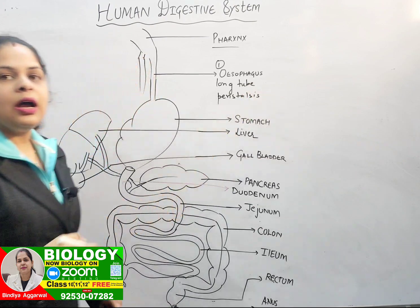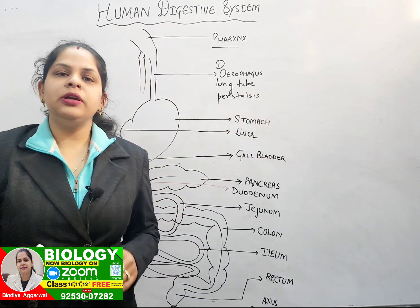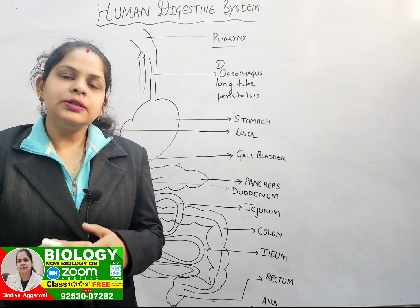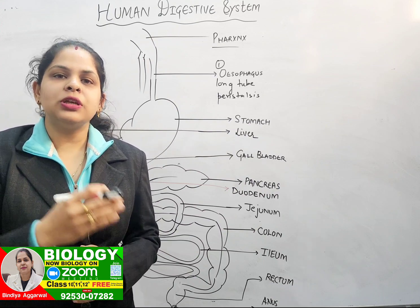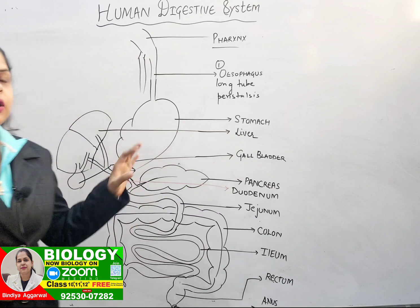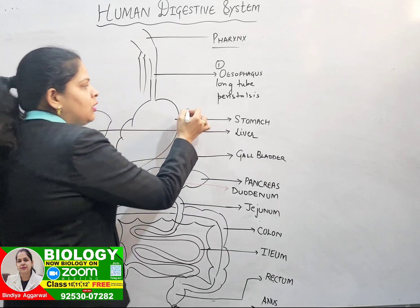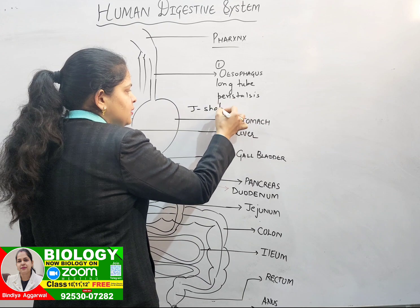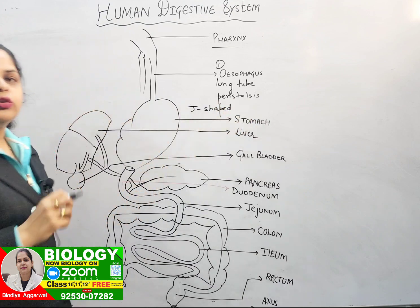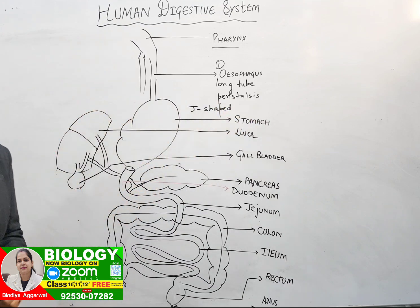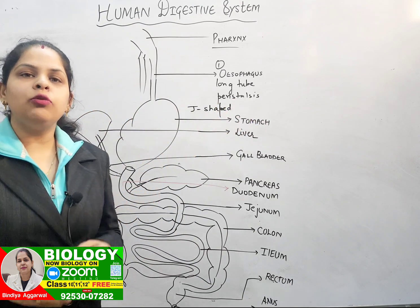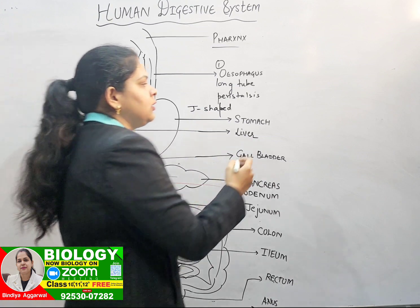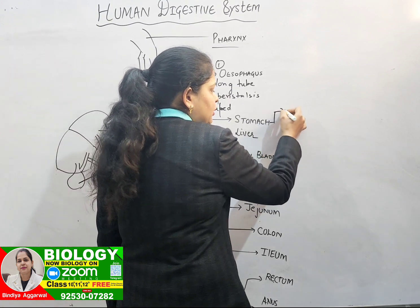Peristalsis refers to movements that exhibit rapid compression and relaxation, due to which food travels from the mouth directly into the stomach. The stomach is a J-shaped, elastic organ where food stays for three to four hours, and partial digestion takes place inside the stomach.